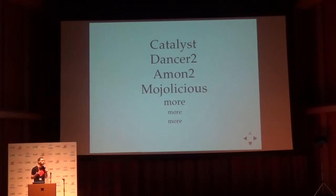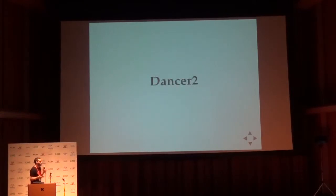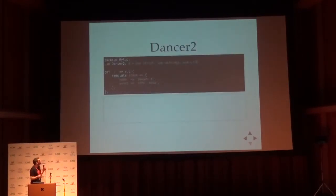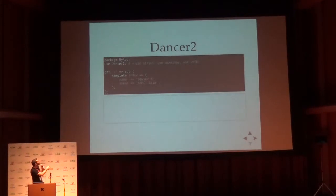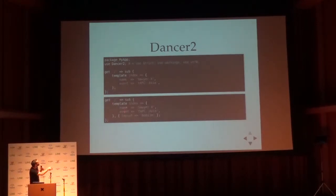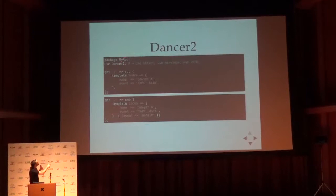What I decided to do was to give a very short talk about Dancer 2 because a lot of people here don't know it. First of all, a simple Dancer 2 application where you have a GET to slash. You render a template called index with some variables. You can do the same thing with a different layout other than the default one. When you use Dancer 2, you get strict warnings in UTF-8.